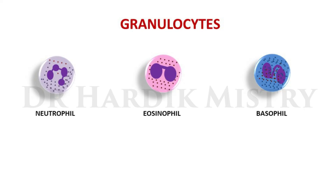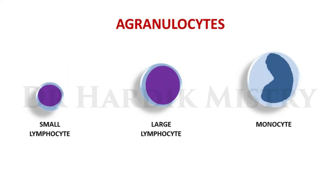Neutrophil has 2 to 6 lobes of the nucleus and granules are present. Eosinophil has 2 lobes arranged in a spectacle shape with granules present. Basophil has 2 lobes arranged in an S-shape with granules that obscure the nucleus. Lymphocytes have an oval-shaped nucleus with no granules, and the nucleus occupies almost two-thirds of the cytoplasm. Small lymphocytes are approximately the size of an RBC, large lymphocytes are nearly double that size. Monocyte is the largest cell in peripheral blood and has a kidney-shaped nucleus.